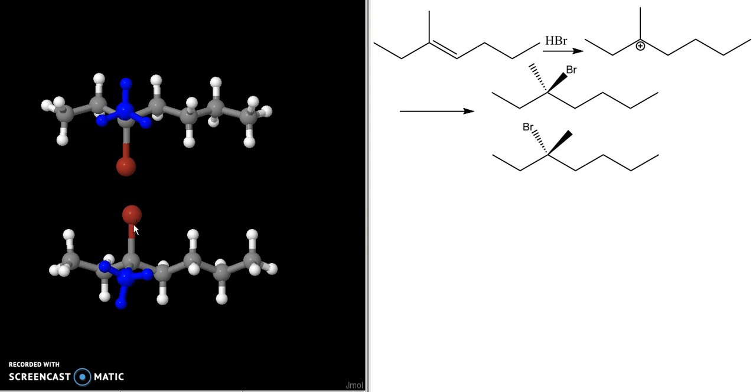That makes them enantiomers. In fact, this top isomer is the R isomer, this bottom isomer is the S isomer. We're not going to look at this in this video, but if there were a methyl group here, then the reaction results would be a little bit more complicated.